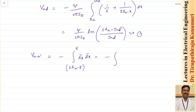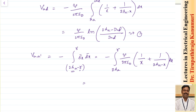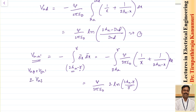Since R is far less compared to 2H_A, R can be neglected. This becomes integration from 2H_A to R, giving Q by 2π ε₀ into — due to one conductor it is 1/X, and 1 by (2H_A minus X) due to the image conductor. This equals Q by 2π ε₀ into 2 times ln of (2H_A minus R) divided by R. Since V_AA dash equals 2 times V_A, this can be written as 2 times V_AA.